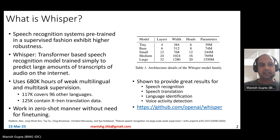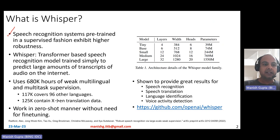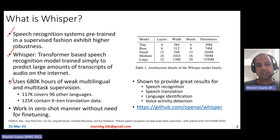What is Whisper? Speech recognition systems pre-trained in a supervised fashion have been shown to provide very good robustness, meaning if they are trained on a particular dataset, they work really nicely even on other datasets. Accordingly, Whisper is a transformer-based speech recognition model trained simply to predict large amounts of transcripts of audios on the Internet. It uses 680,000 hours of weak multilingual and multitask supervision.